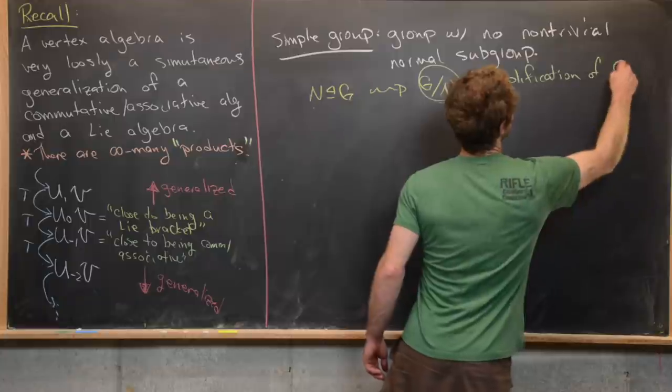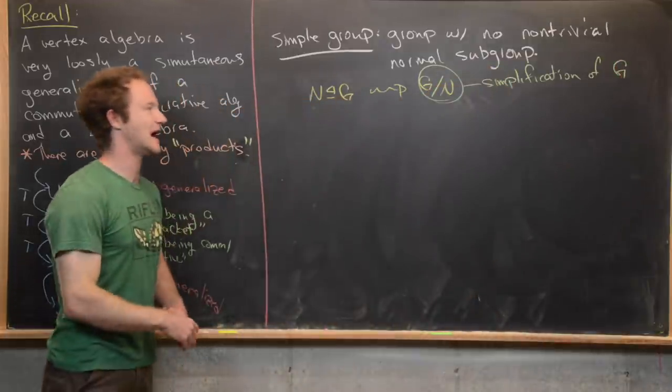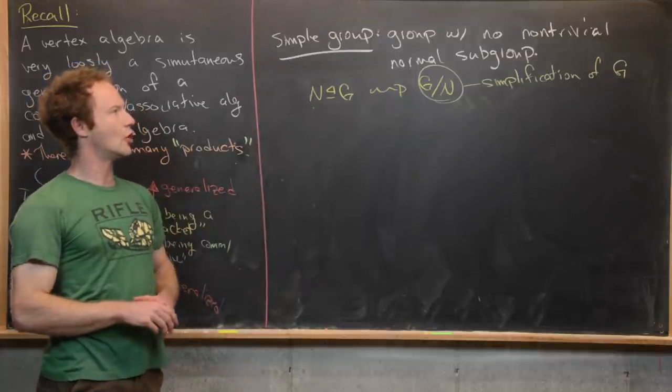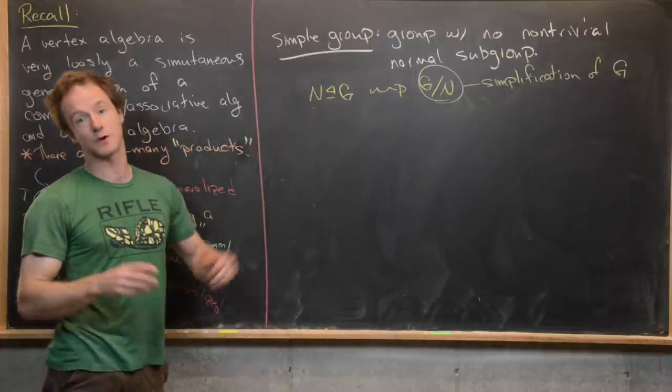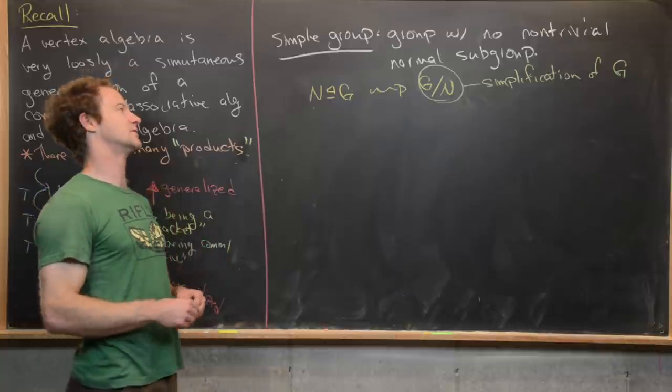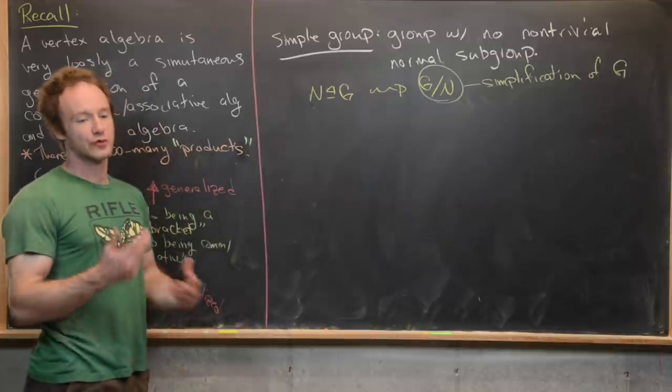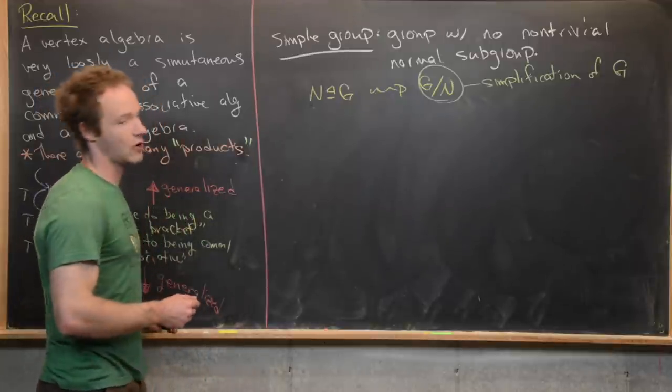So we can think about this as some sort of simplification of G. And well it's a simplification of G by N. You're like quotienting out this N. But if there are no normal subgroups or no non-trivial normal subgroups, by which I mean other than the identity and the whole group, then the group is as simple as it can get already.